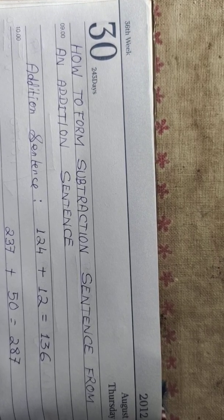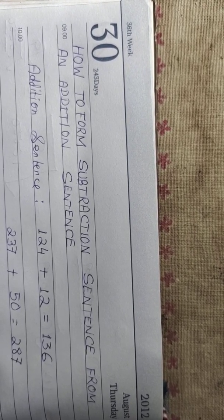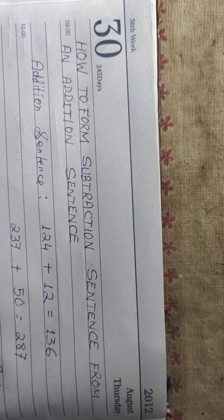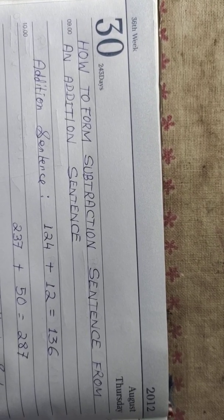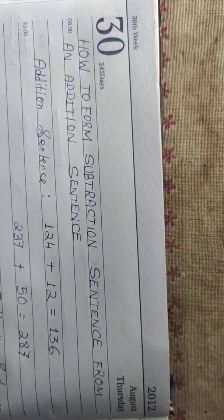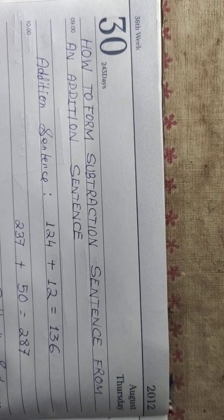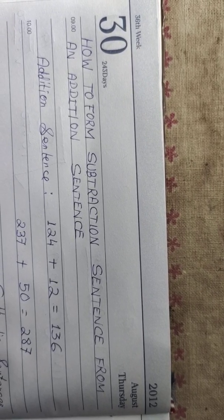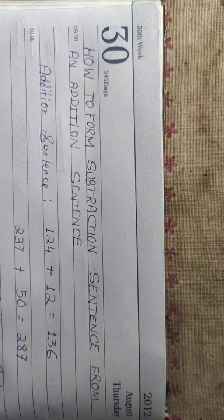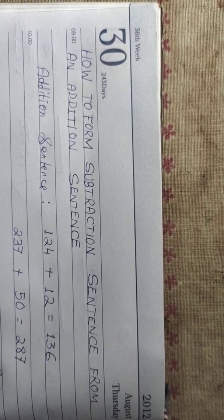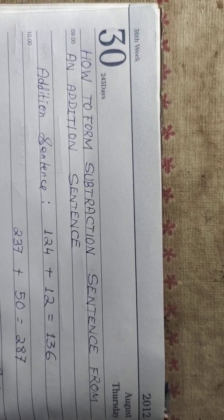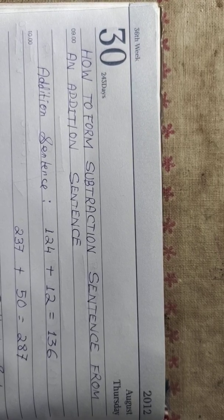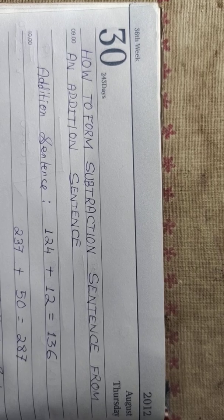First of all you need to know what is an addition sentence. I have given over here examples of two addition sentences. Here we have the first one: 124 plus 12 equals to 136. This is an addition sentence because we have done the operation of addition. Another addition sentence is 237 plus 50 equals to 287. So these are the two addition sentences.